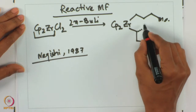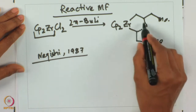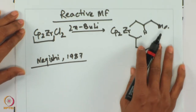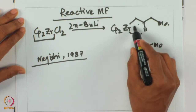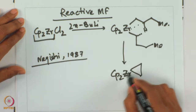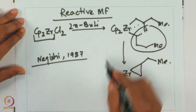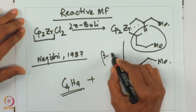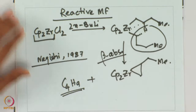Two equivalents of n-butyl lithium react to give the Cp2 zirconium dialkyl intermediate. From there, the hydride undergoes beta abstraction — this is an alpha-beta zirconium in the Zr(IV) oxidation state. Therefore, there is no possibility of beta hydride elimination. A beta abstraction at this position gives rise to the Cp2 zirconium cyclopropane intermediate, with C4H9 forming as the alkane byproduct.